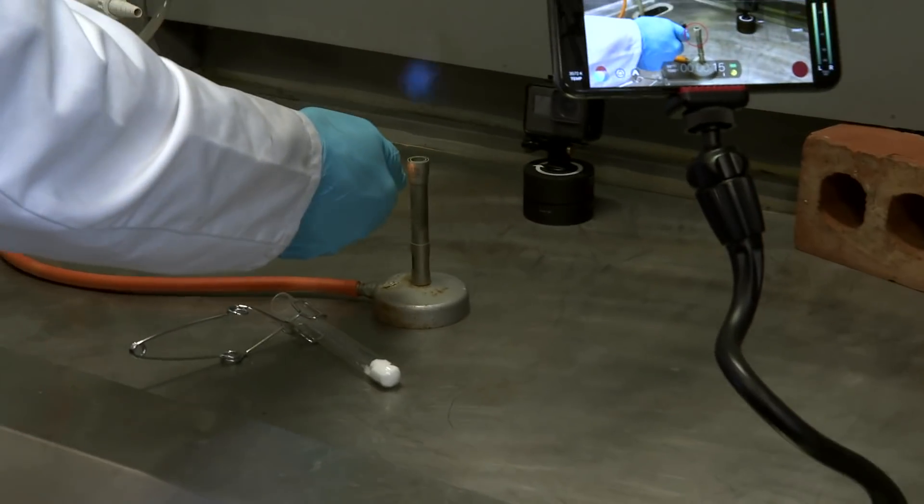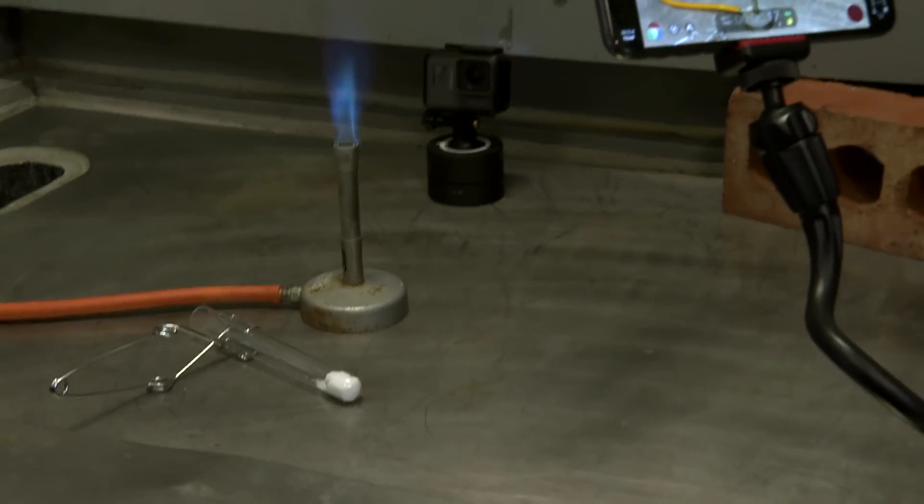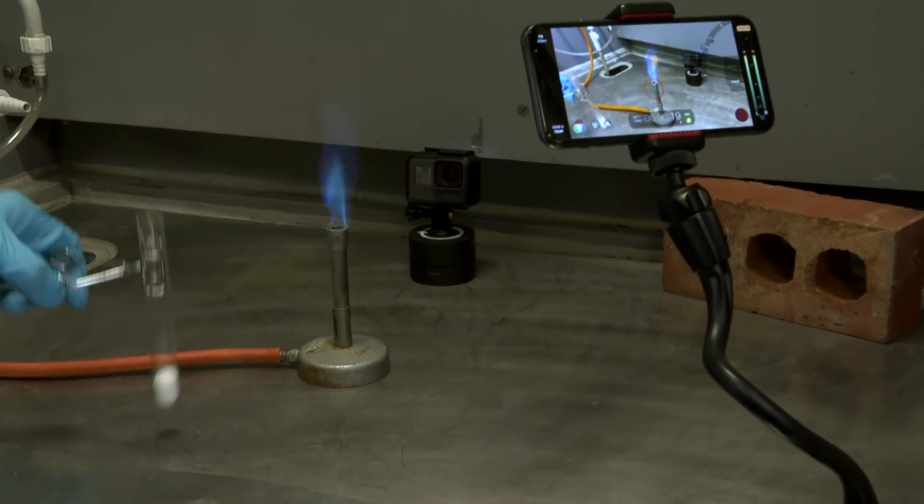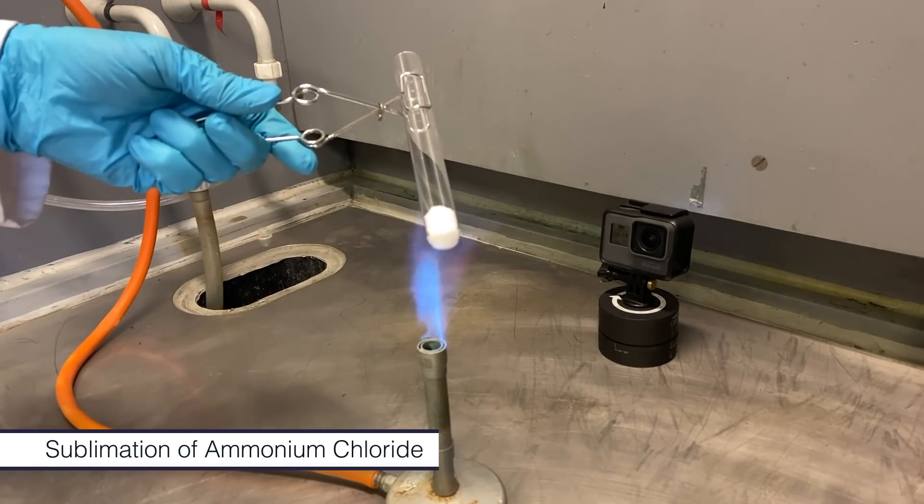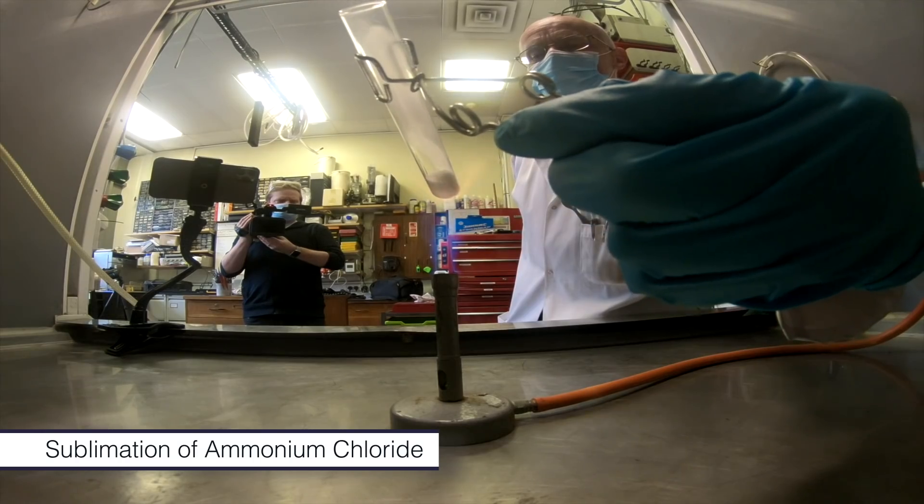Let's begin with ammonium chloride and what happens when you heat it. Most things when you heat them either melt or occasionally decompose, but ammonium chloride is unusual in that when you heat it, it undergoes what is called sublimation—turns into a gas which then goes straight back to the solid.